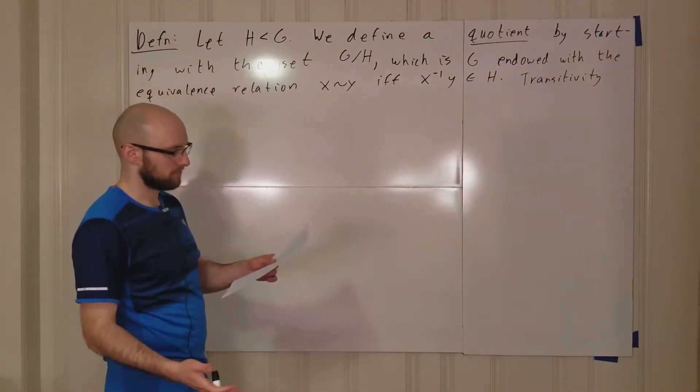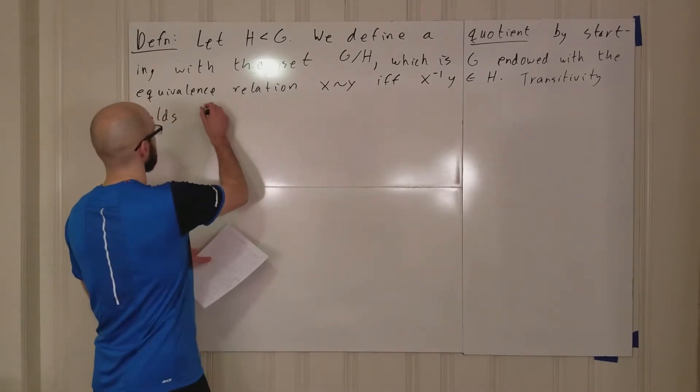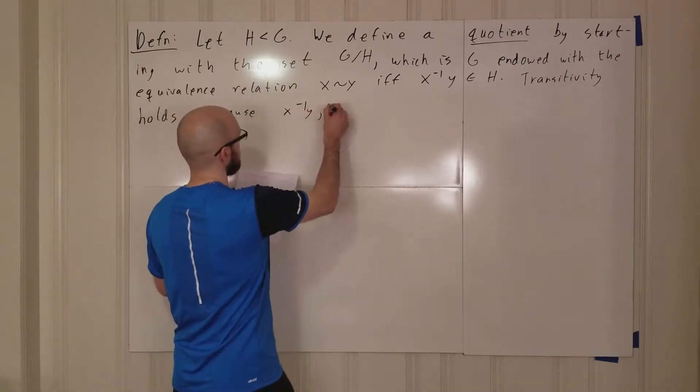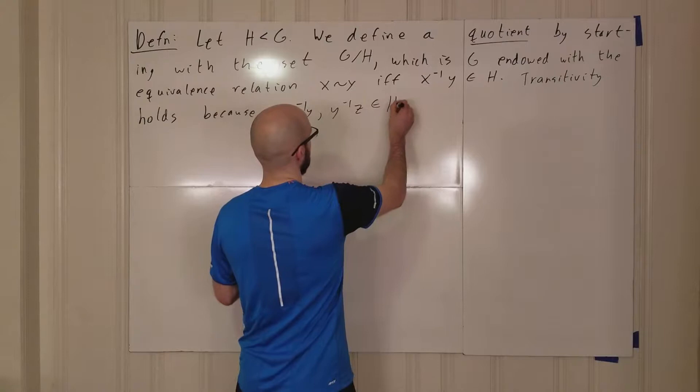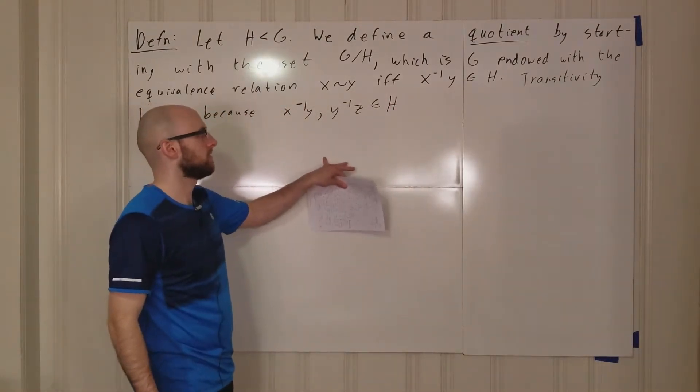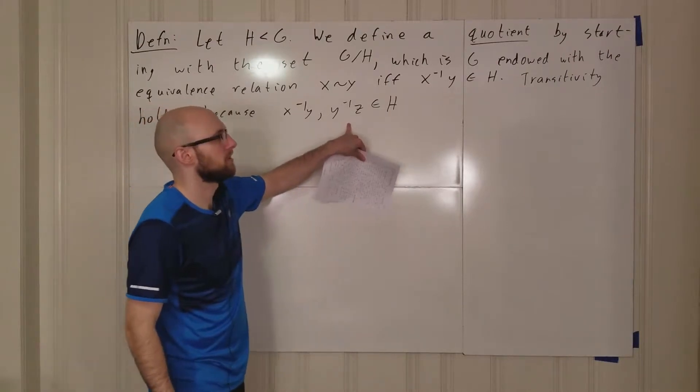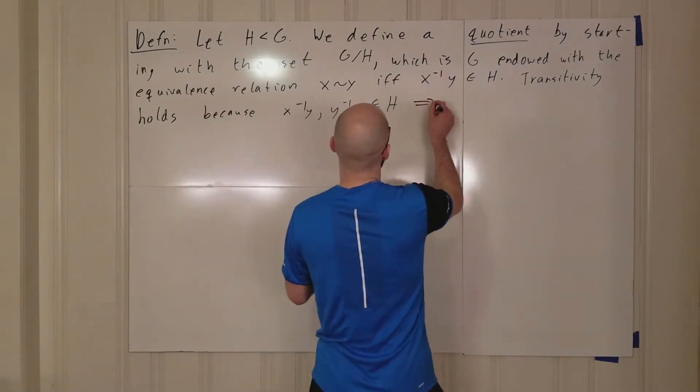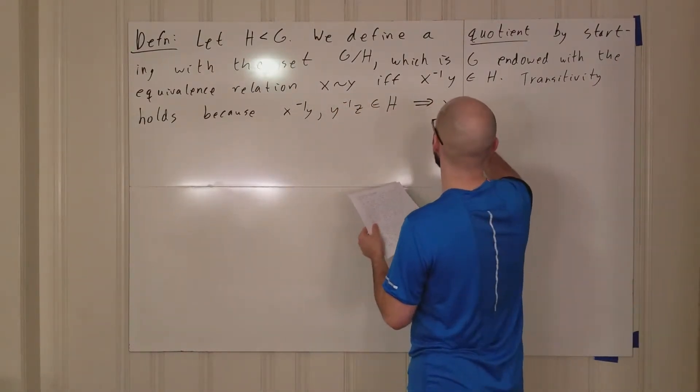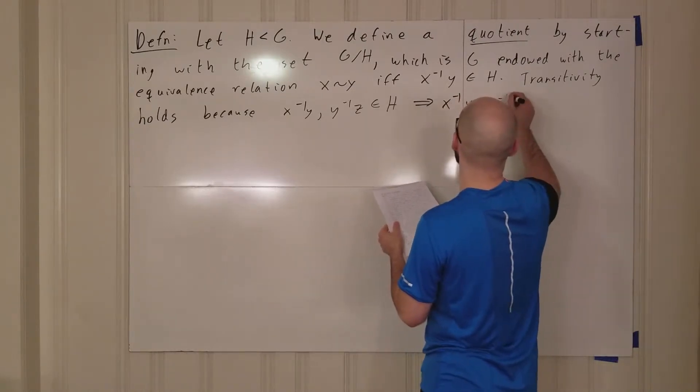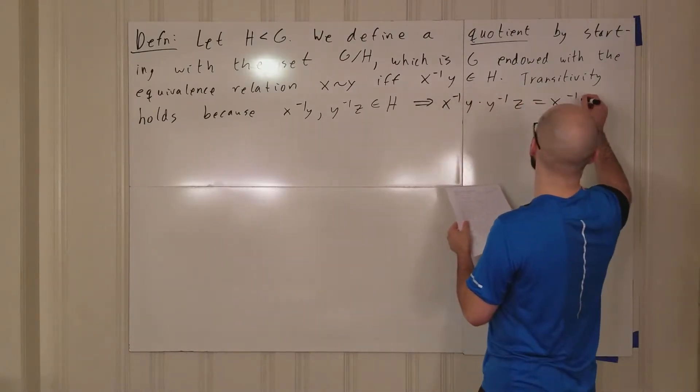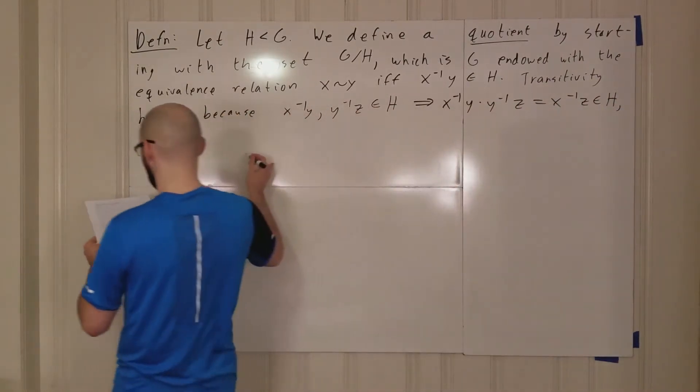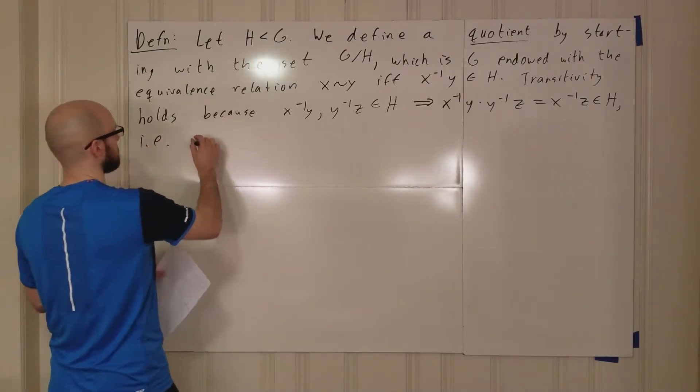Transitivity holds because if x inverse y and y inverse z are in H, so if x is equivalent to y and y is equivalent to z, then x inverse y and y inverse z are both in H. If these two are in H, then so is their product x inverse y times y inverse z, but that's just x inverse z is in H, i.e., x is equivalent to z.